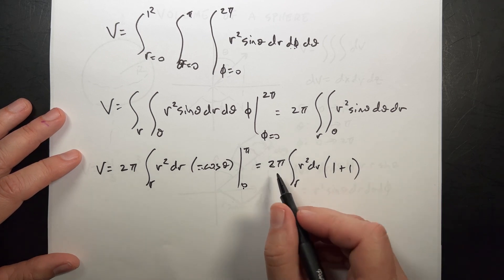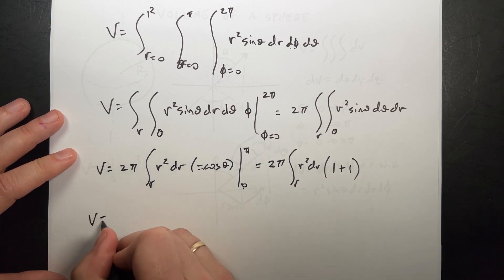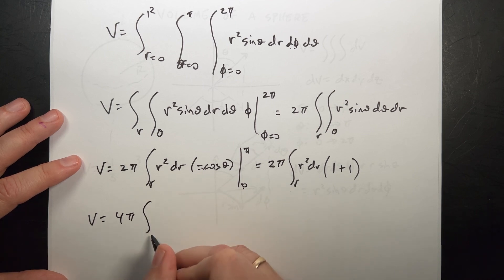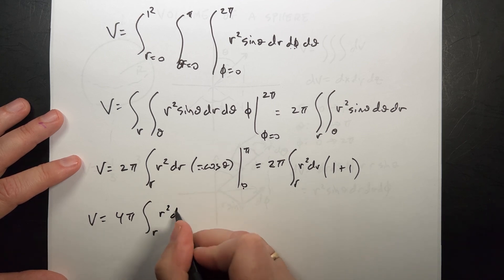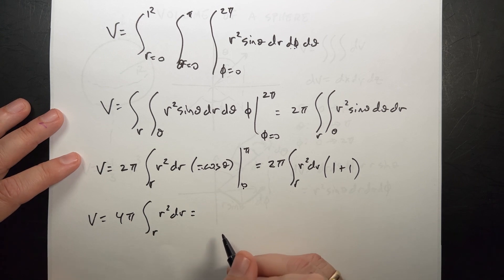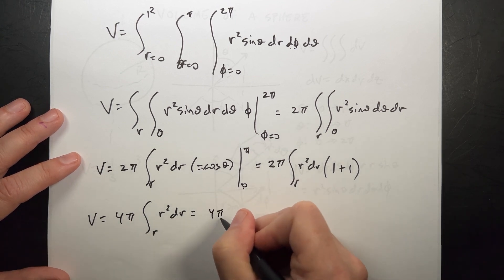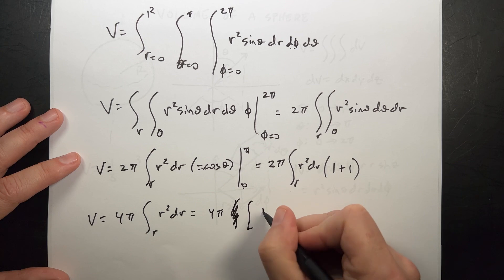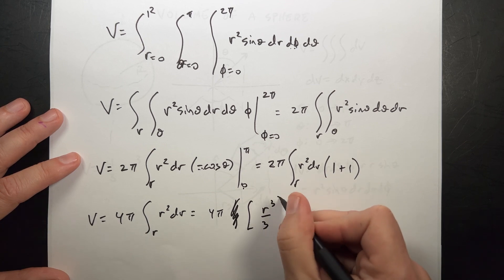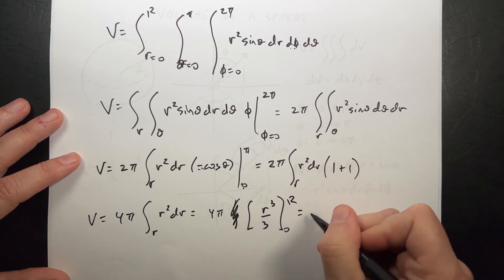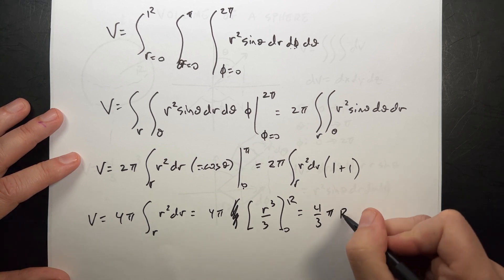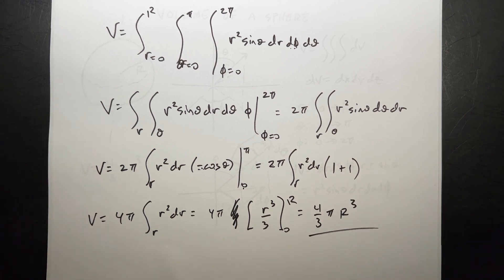So now I get V = 4π times the integral of r² dr from 0 to R, which gives 4π times r³/3 evaluated from 0 to R — which is 4/3 π R³. Done! It's really easy once you have that volume element.